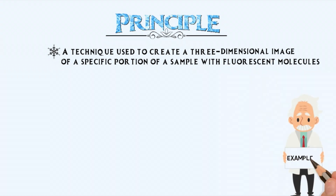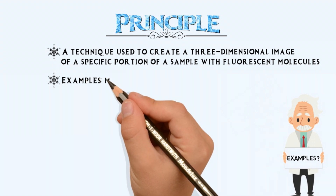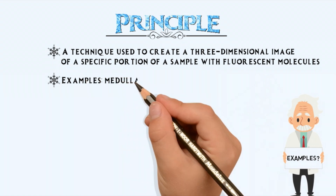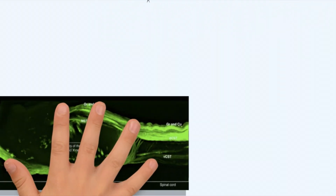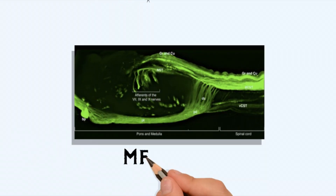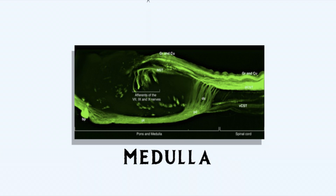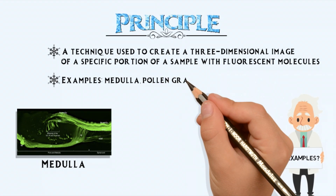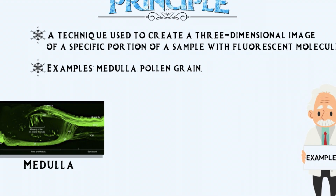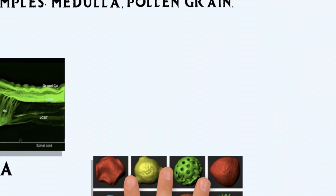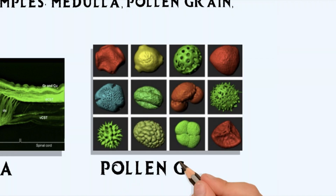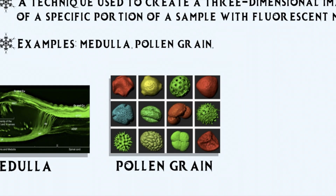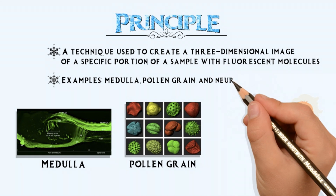A few examples of objects often examined by CFM are the medulla, a pollen grain, and a neuron.